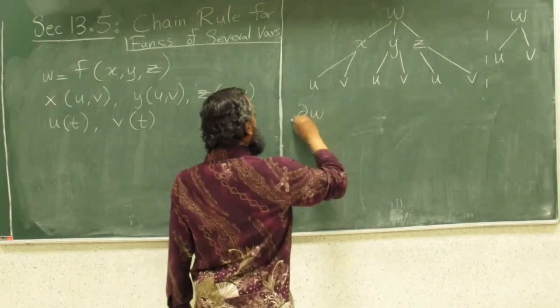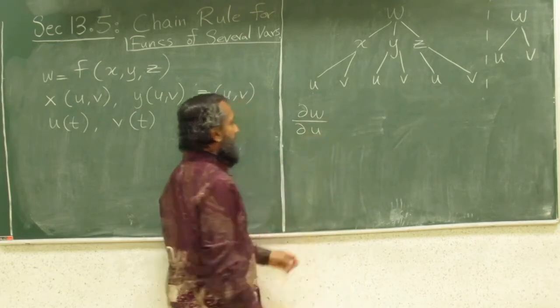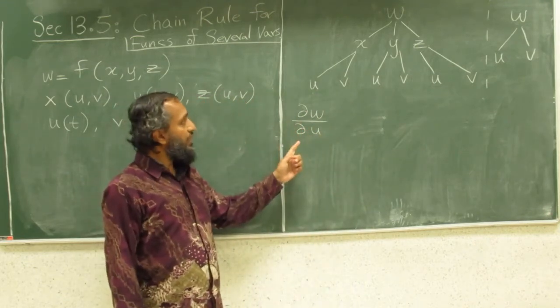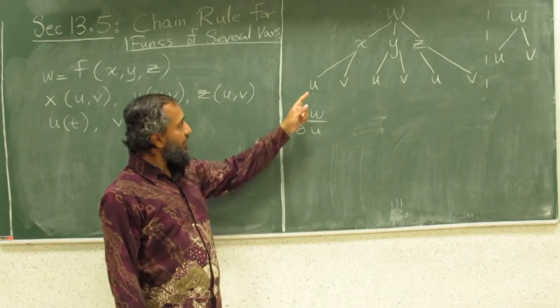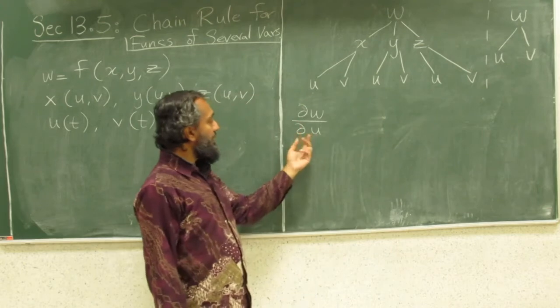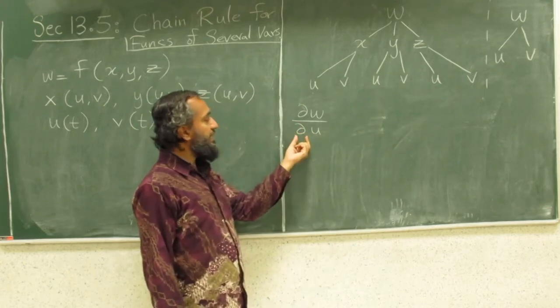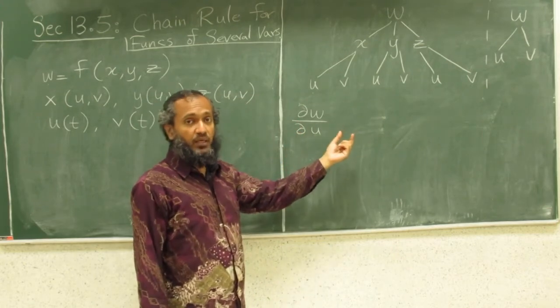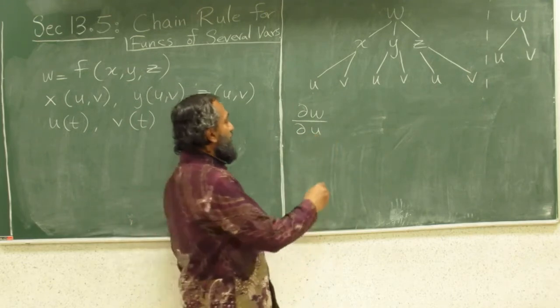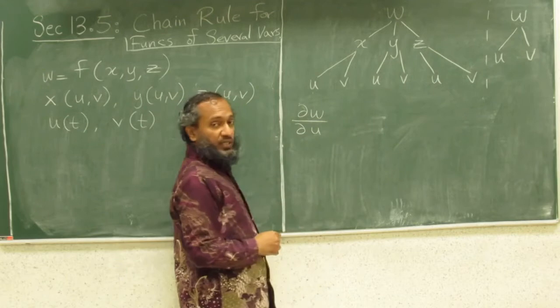Somebody might ask you, what is ∂w/∂u and why the curly d is a proper notation here? Because that is a function of u and v, right? This notation is a way of indicating that, hey, there are more variables involved, but I am only caring for u at this moment.